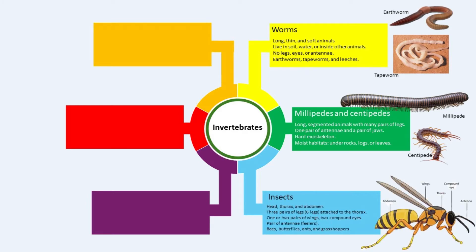Insects are the most abundant group of invertebrates. They have three body parts: head, thorax and abdomen. Insects have a hard skin around their bodies which protects them and is important for movement. They have three pairs of legs — six legs — attached to the thorax, and one or two pairs of wings. They have two compound eyes, which are large eyes made up of many small parts, and some insects also have simple small eyes. Insects have a pair of antennae, or feelers, to sense their surroundings. Some examples of insects are bees, butterflies, ants and grasshoppers.